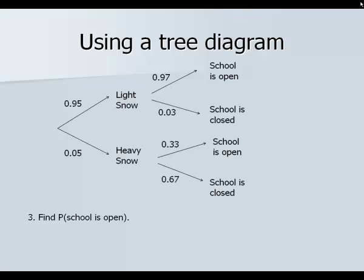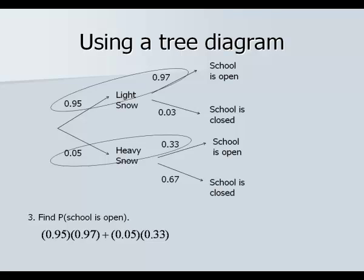Number three asks us to find the probability that school is open. This can occur in one of two ways. On the first path, we do 0.95 multiplied by 0.97. On the second path, we do 0.05 multiplied by 0.33. Take each path, multiply, and then add them up, because school being open could happen via the first path or the second path. You should end up with 0.938 or 93.8 percent chance that school will be open.